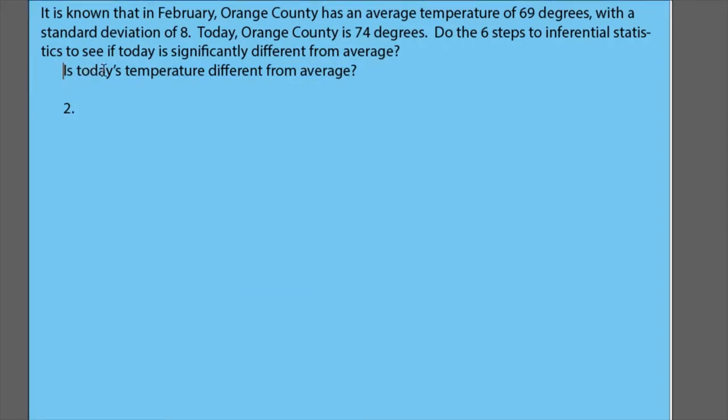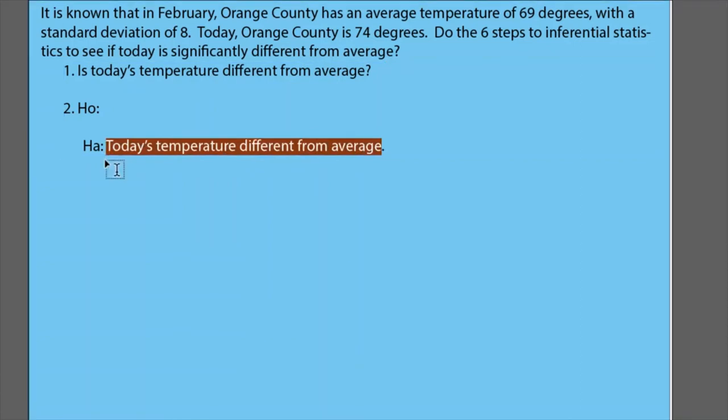For step two, I want to have my null and alternative hypotheses set up and they're really going to come from that research question. I might start off with the null and then go and do the alternative, but remember the alternative really is the research question as a statement. I'm going to put it into a statement here for the alternative. I'm going to take off the 'is' because it's not a question anymore. It's going to say 'today's temperature is different from average'.